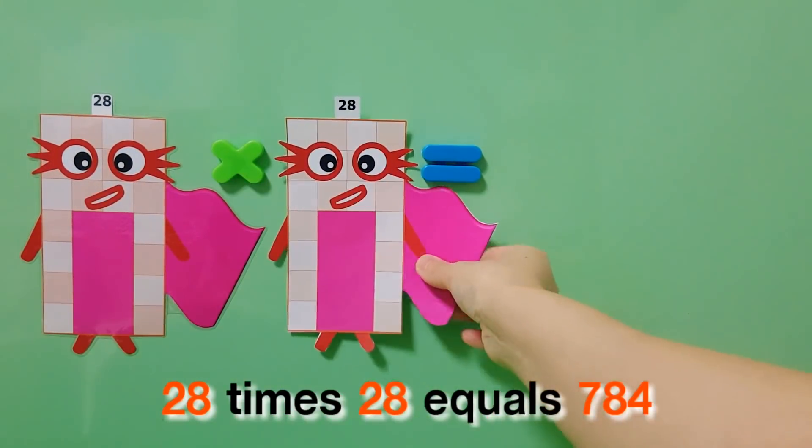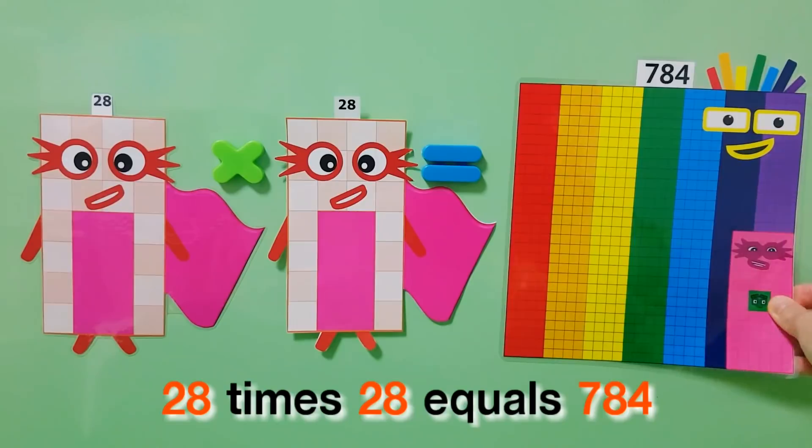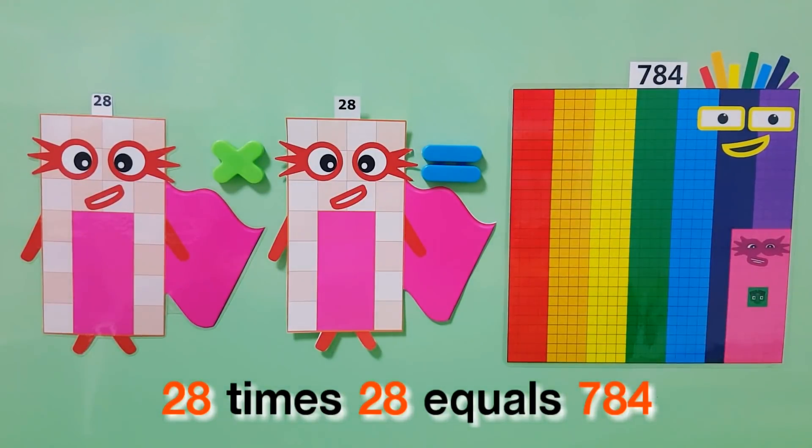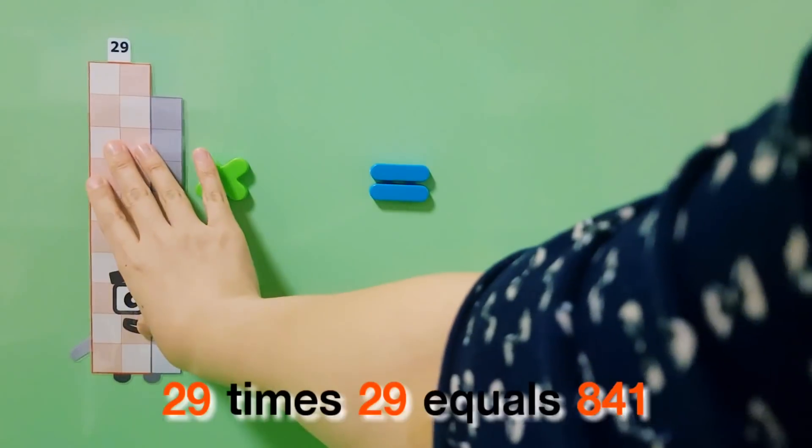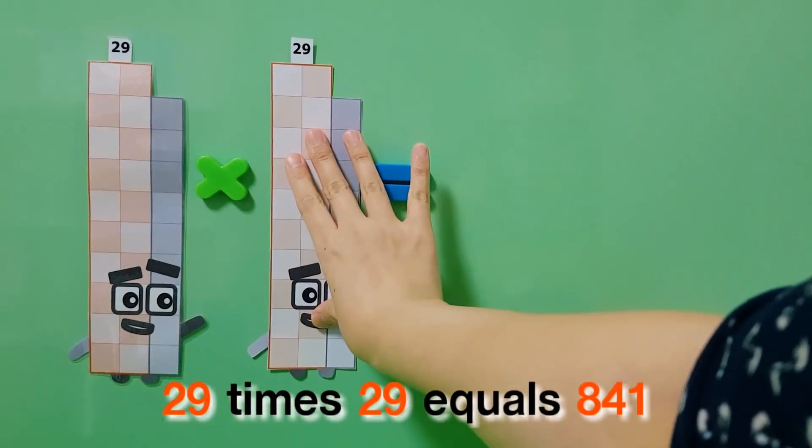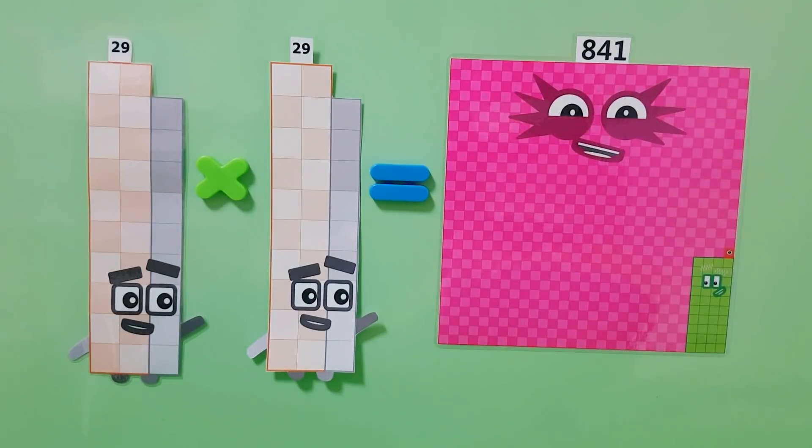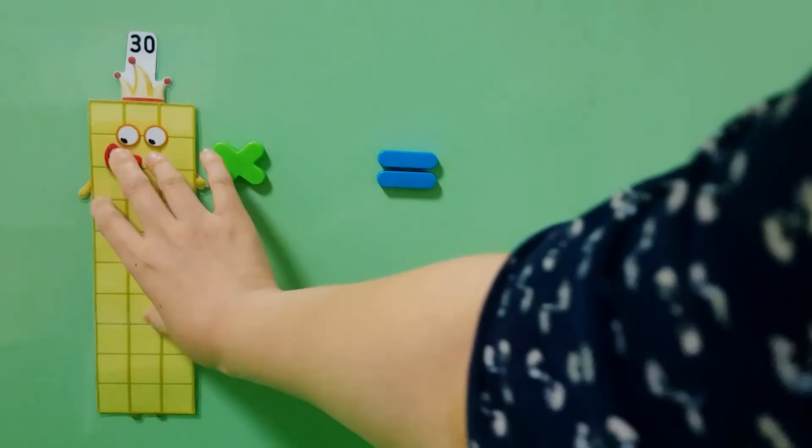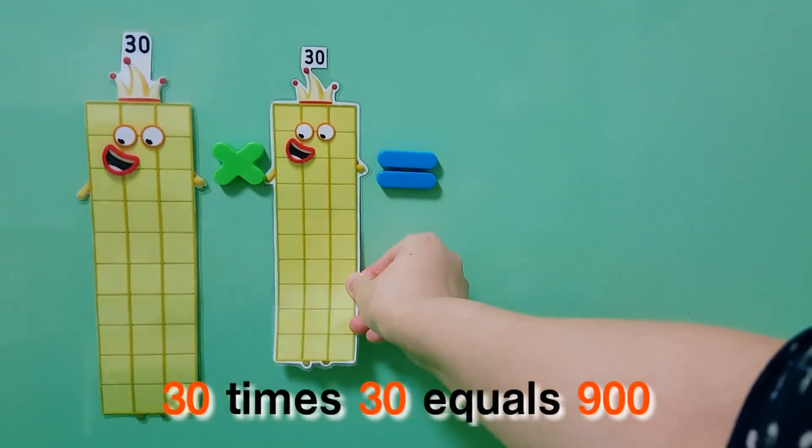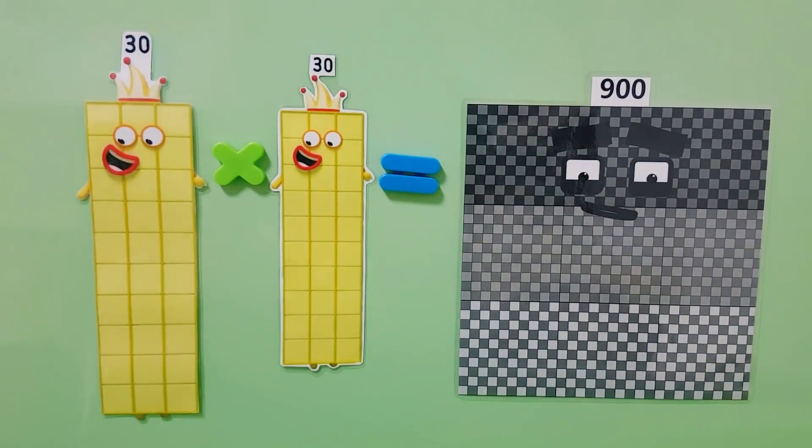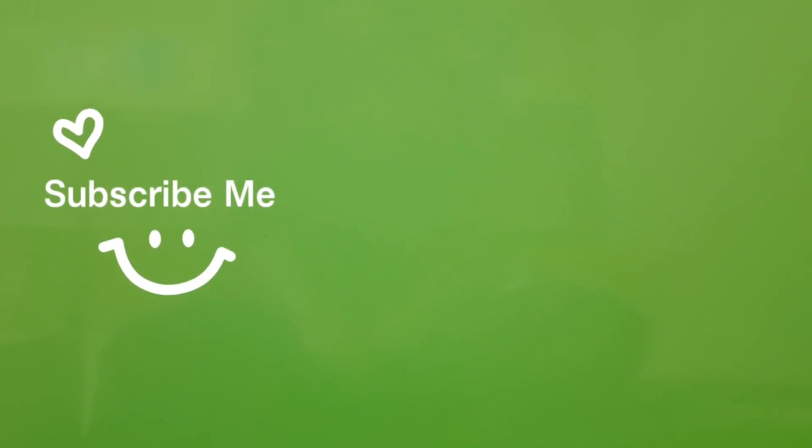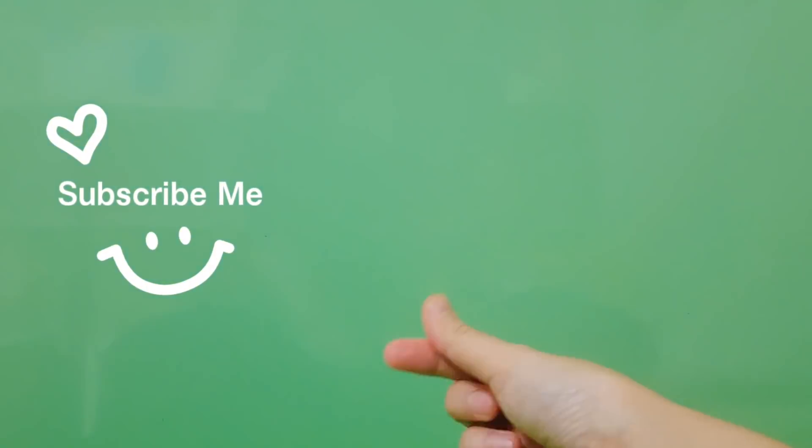28 times 28 equals 784, 29 times 29 equals 841, 30 times 30 equals 900